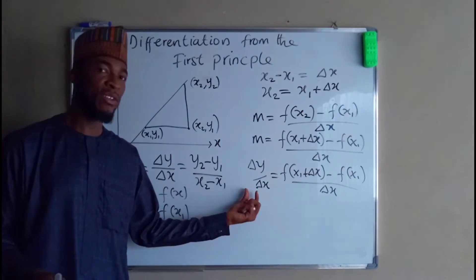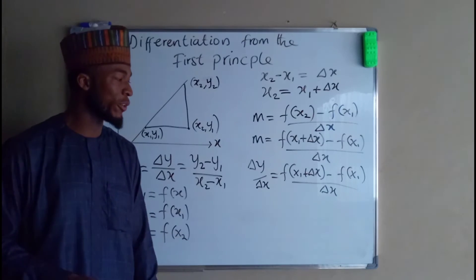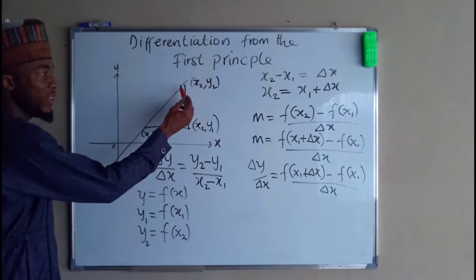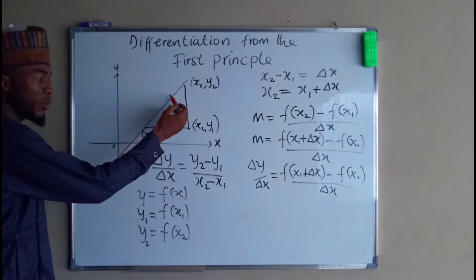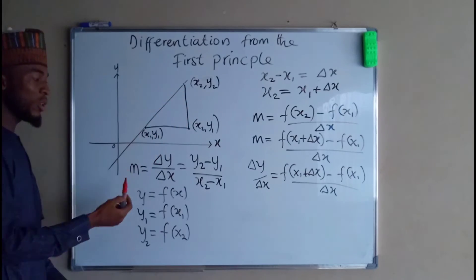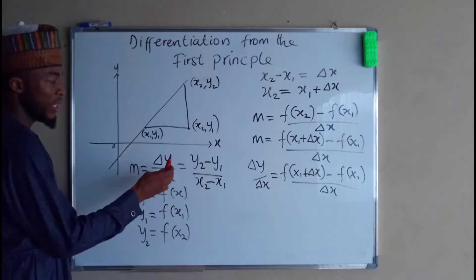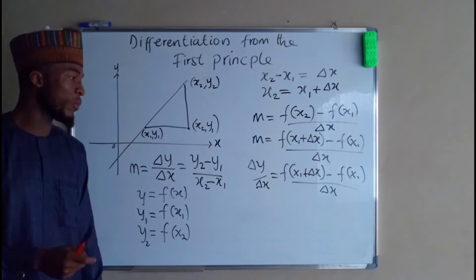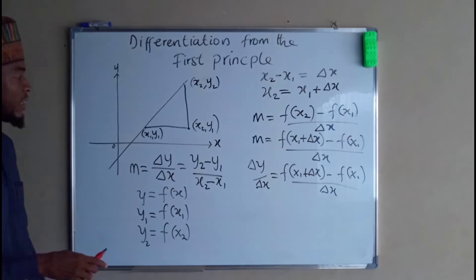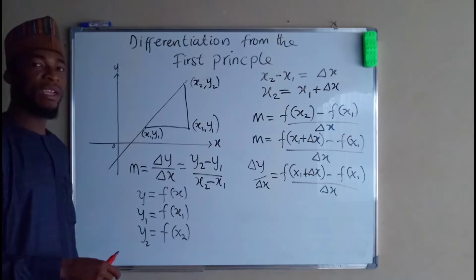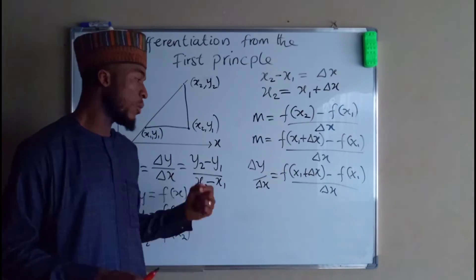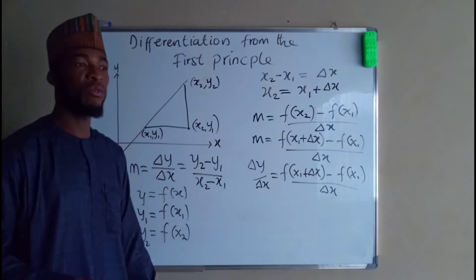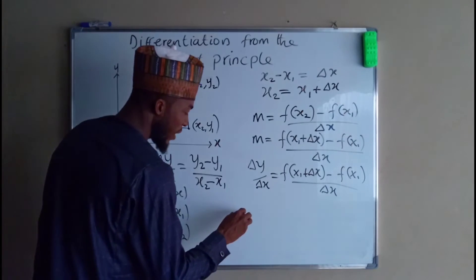This is our derivative of a function from the first principle. So if this point should move closer and closer to the first coordinate, the change along the x axis will tend to be equal to 0. In that case, in order to obtain more and more accurate results, we need to set the limit of dx to approach 0.